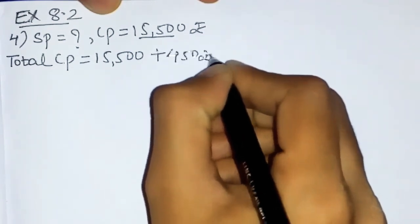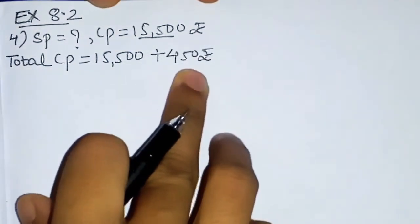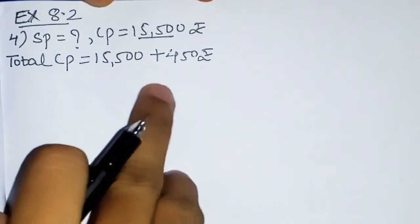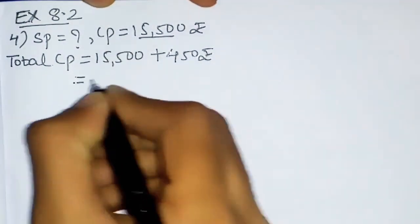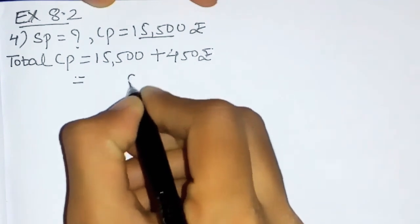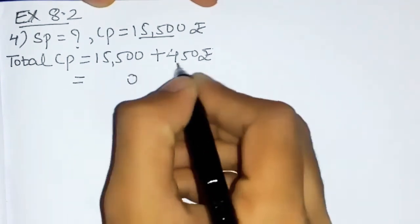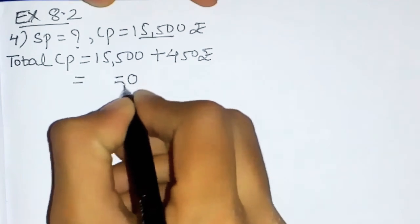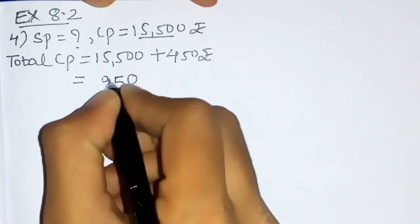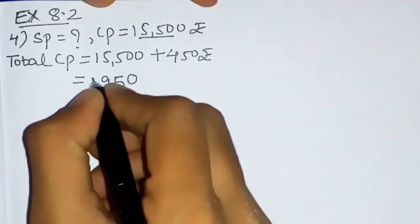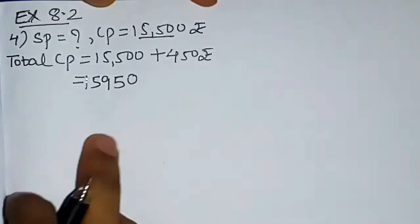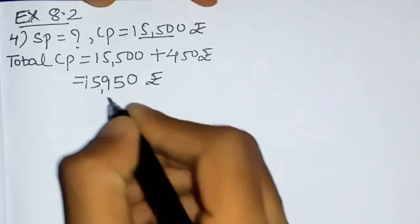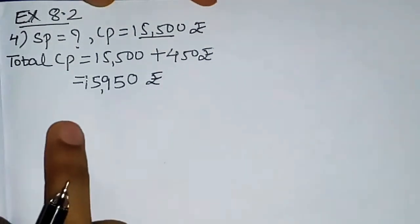Total CP equals ₹15,500 plus ₹450 for repair work. After adding: zero plus zero is zero, five plus zero is five, five plus four is nine, then five, then one. So total CP is ₹15,950.